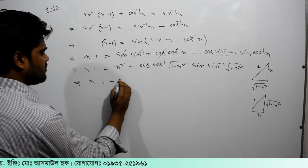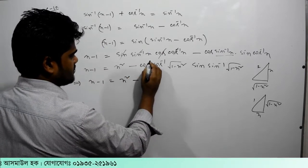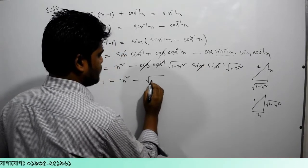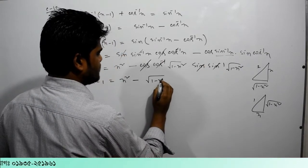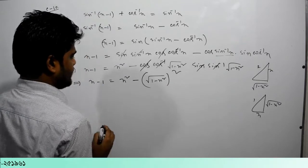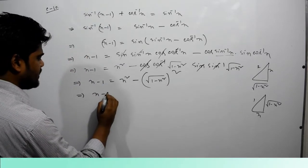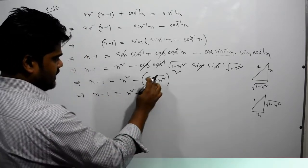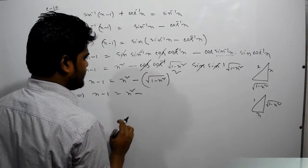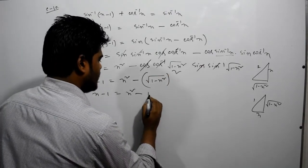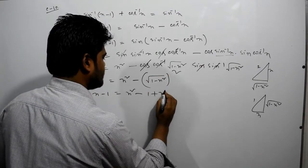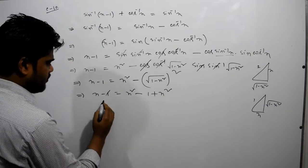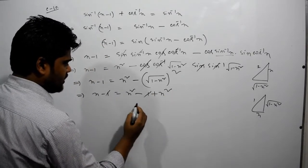এখানে কতো হয়? x minus 1 = x square minus — cos cos কাটা রেটা কাটা। তাহলে কী হয়? root over — এই দুটো জুদি গুণ করি তাহলে কী হয় whole square। x minus 1 = x square minus — এই বাকো আর রেটা যদি উঠে যায় তাহলে কী হয় 1 minus e minus e plus x square।